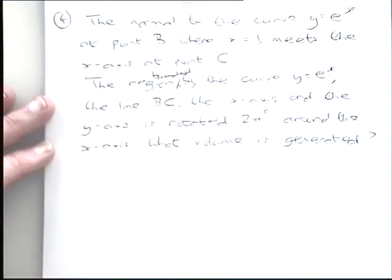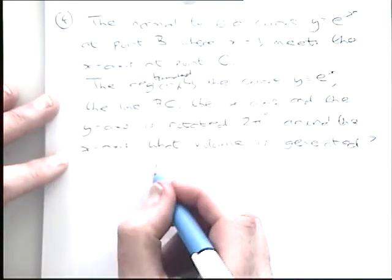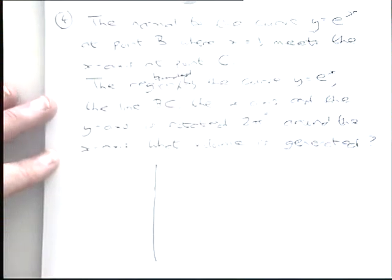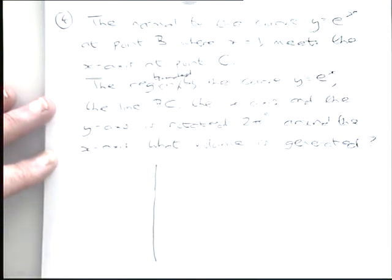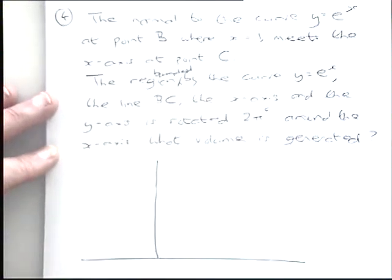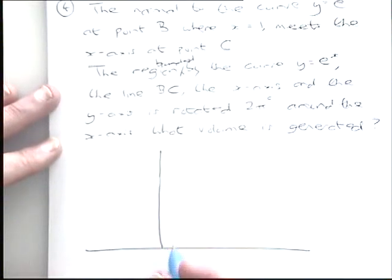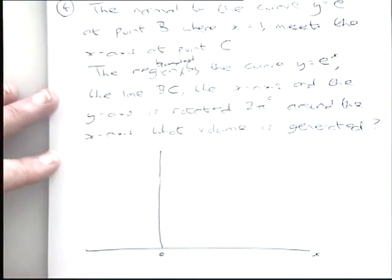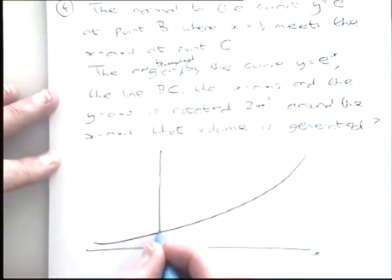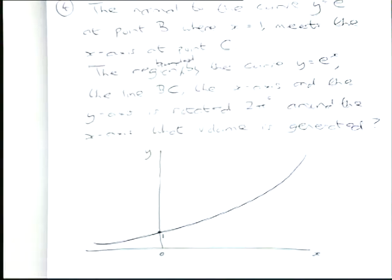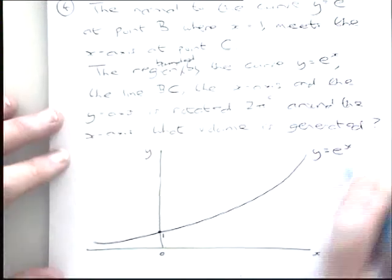A good way to start this question is a diagram. We've got the curve y equals e to the x. What does it look like? When x is 0, e to the x is e to the 0, which is 1. So it crosses the y-axis at the point 1. It has no negative y values. So we've got our curve here, y equals e to the x — just a sketch.